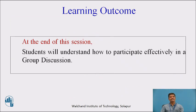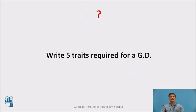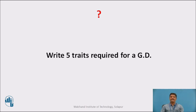Learning Outcome: At the end of this session, students will understand how to participate effectively in a group discussion. Now think about this question and write down the answer in your course journal. You can pause this video and write down your answer. The question is: write five traits required for a GD.